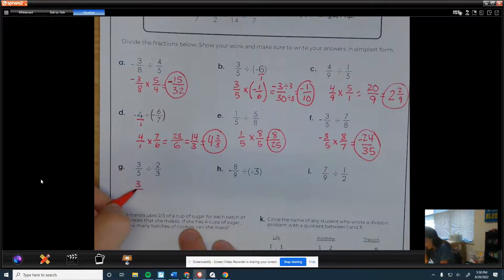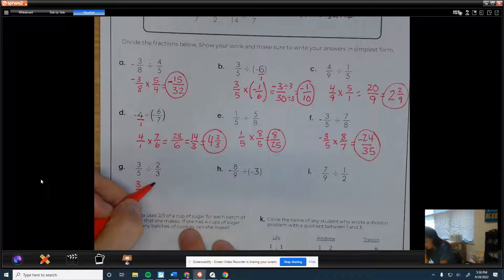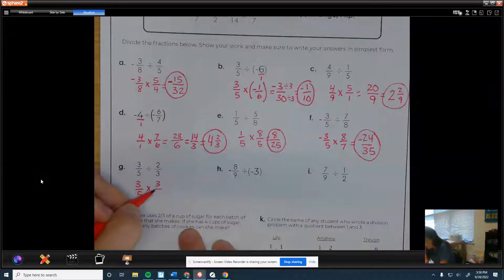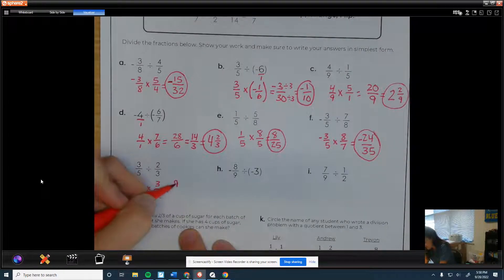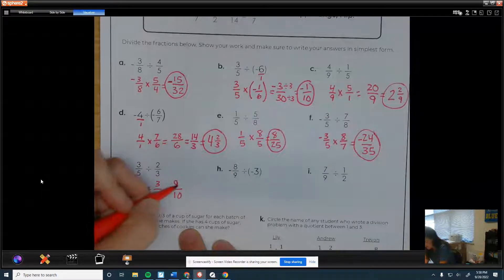Alright, next one. Keep, change, flip. Three times three is nine. Five times two is ten. Nine tenths.